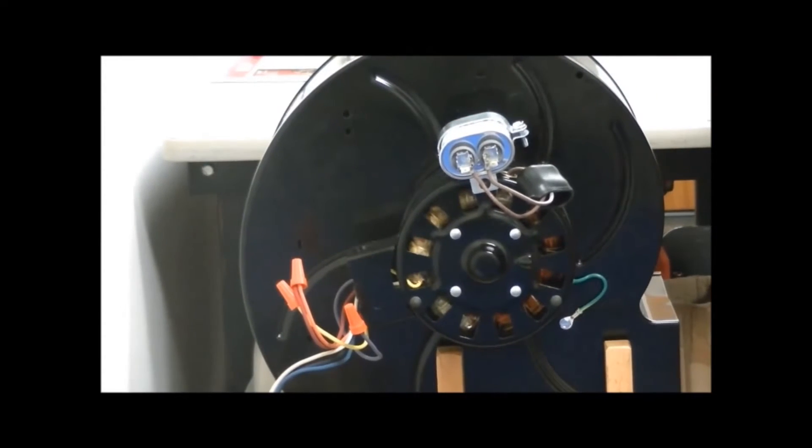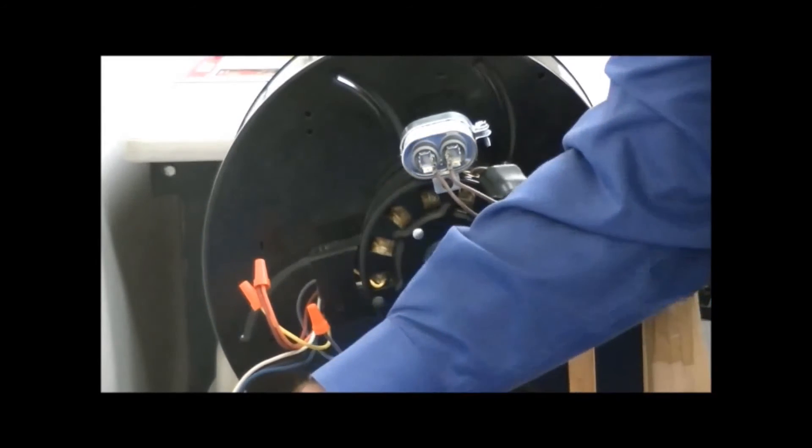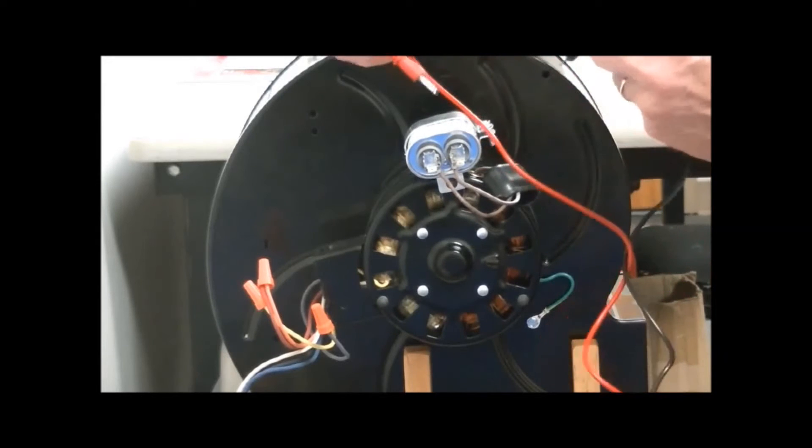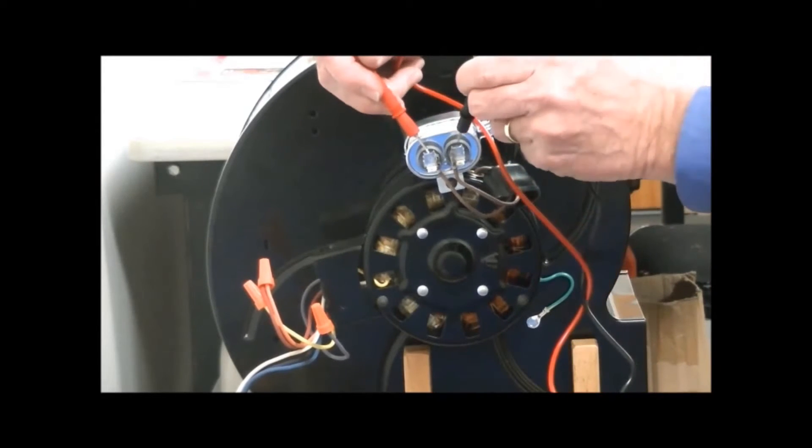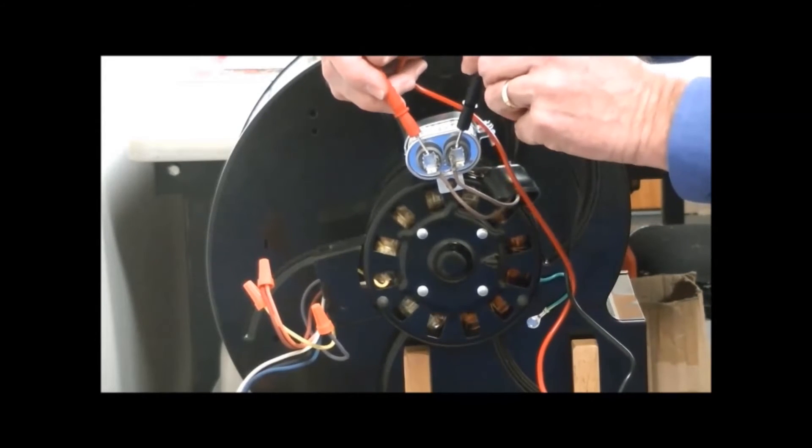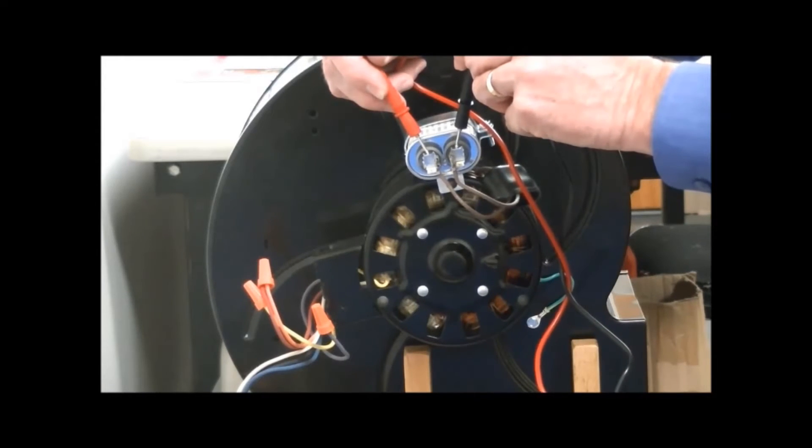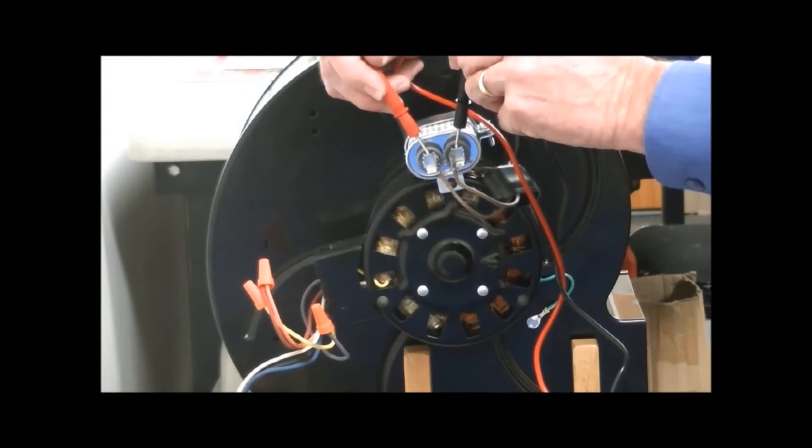In this case here, we will check the volts first, the capacitor volts. To do that, one probe on one side, the other probe on the other. The capacitor volts, in this case, are 318.